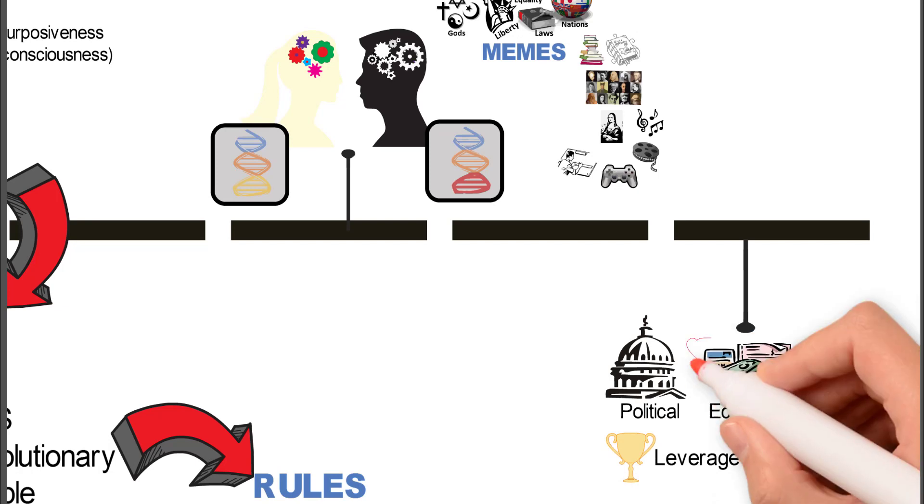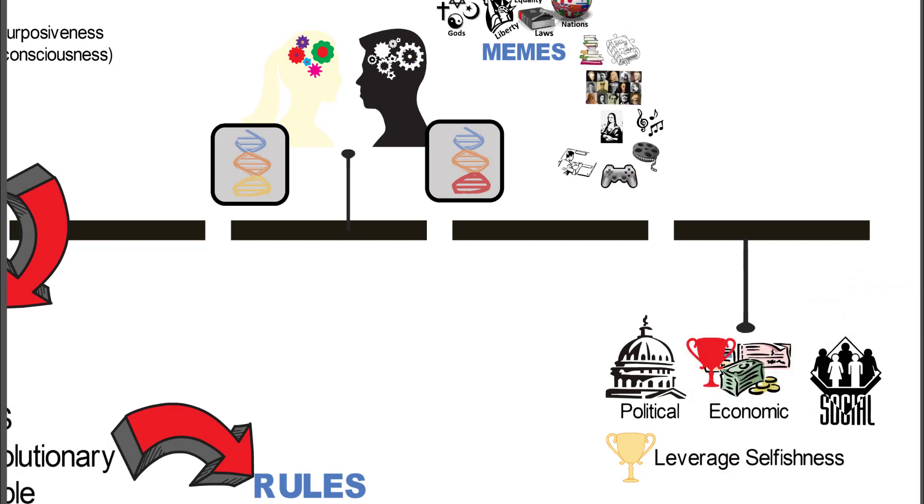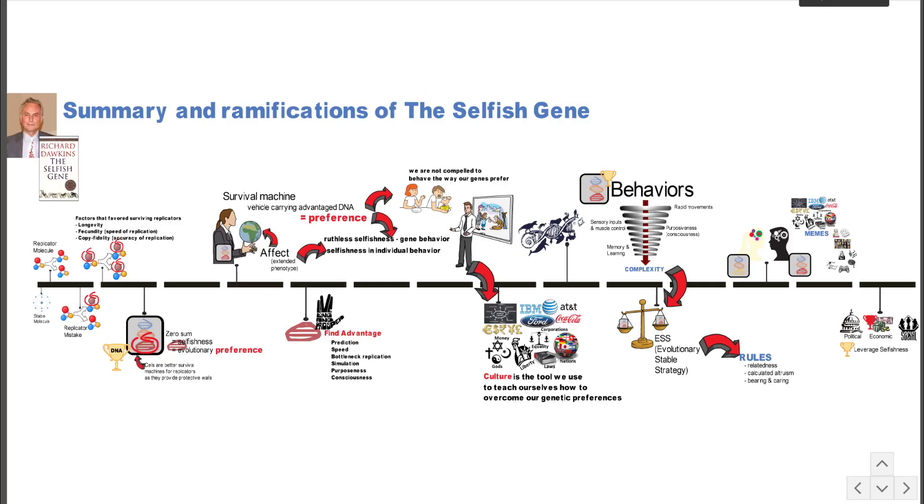Which one best leverages selfishness? And I'm going to argue that really our economic institutions best reference the preference of selfishness. And so it's possible that that's the reason that capitalism is universal, because it's more in sync with our genetic preference. Thank you.